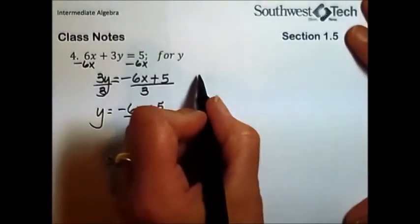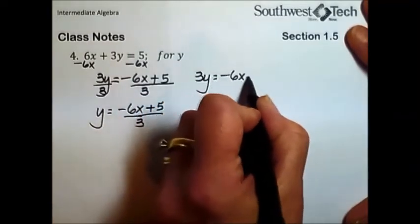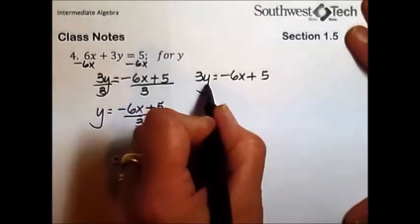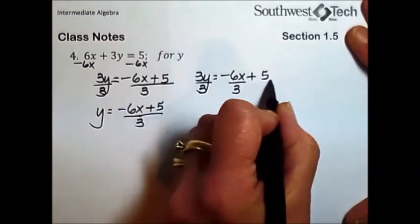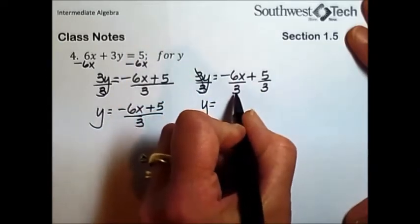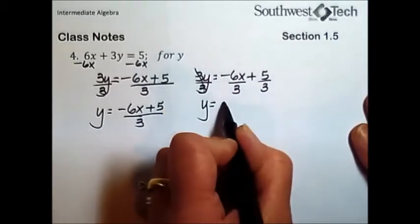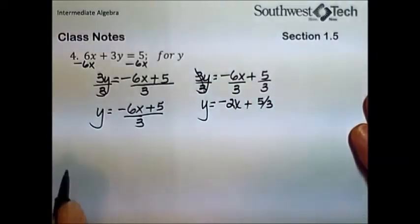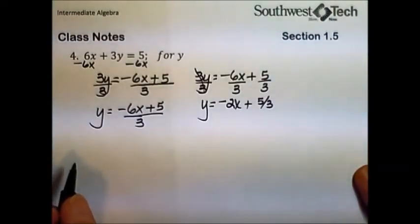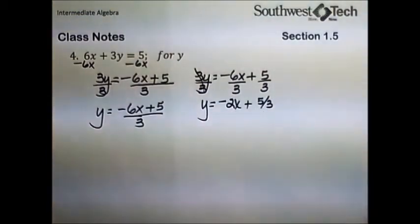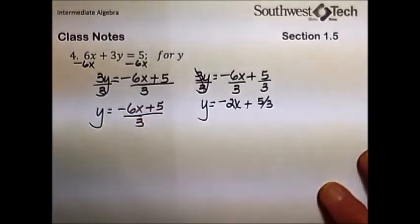The last step to get y completely by itself is to undo the multiplication by 3. So divide by 3 on the left, and to maintain equality, the right side needs to be divided by 3. The 3's cancel out, and we would have an answer of the quantity minus 6x plus 5 all over 3. Another way that we could have done this, instead of dividing both sides by 3 to maintain equality, we also can maintain equality by dividing every term by the same number.